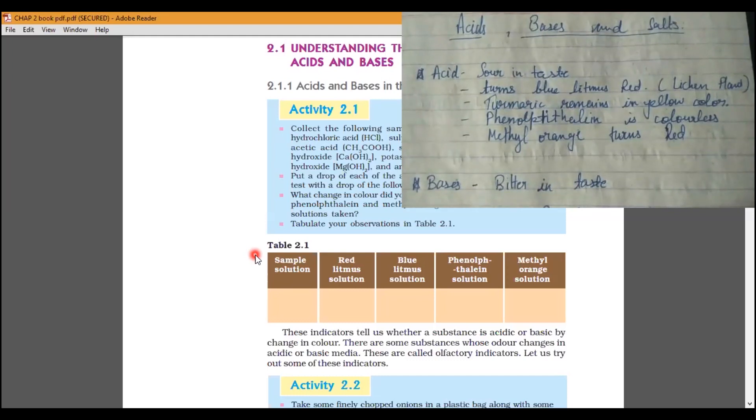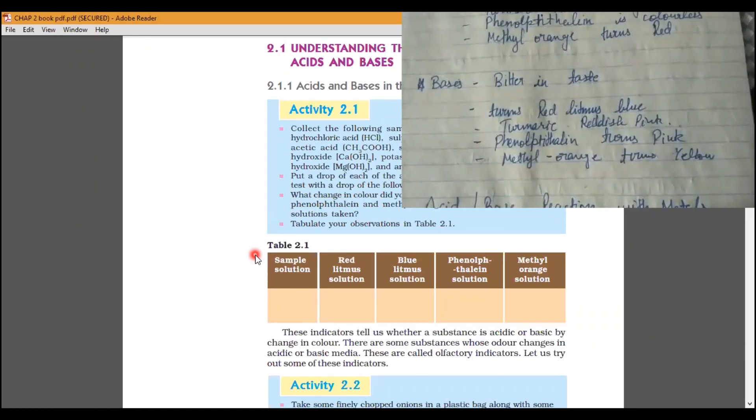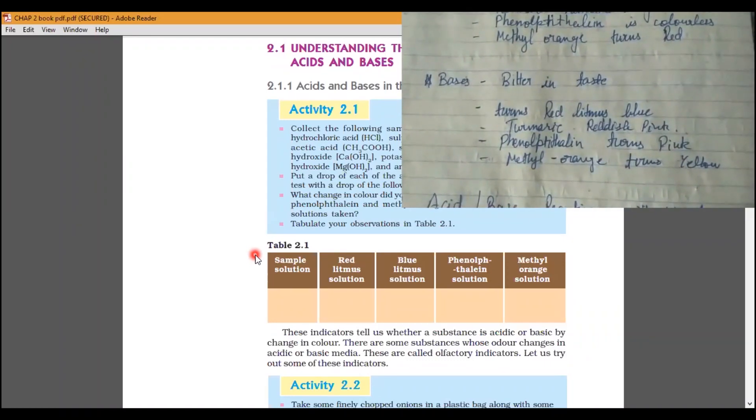Next, we have indicators. Bases. So, the base is bitter in taste. Red Litmus is blue. Turmeric is reddish pink. Phenophthalene is pink. Methyl orange is yellow.